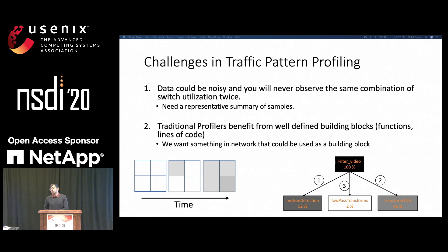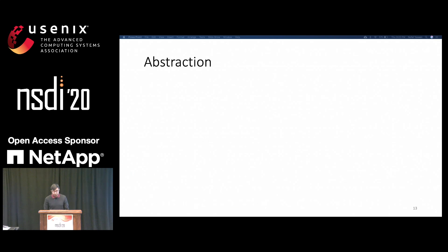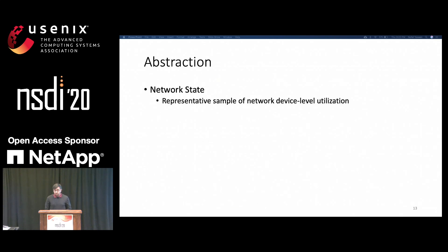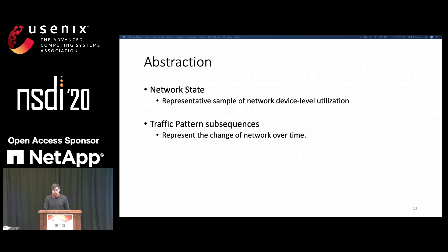To resolve these challenges, we introduce two abstractions: the first is the network state, which is an approximate representative sample of network device-level utilization; and the other is a traffic pattern subsequence to represent the change of network over time. I'll go into more detail later in this presentation.